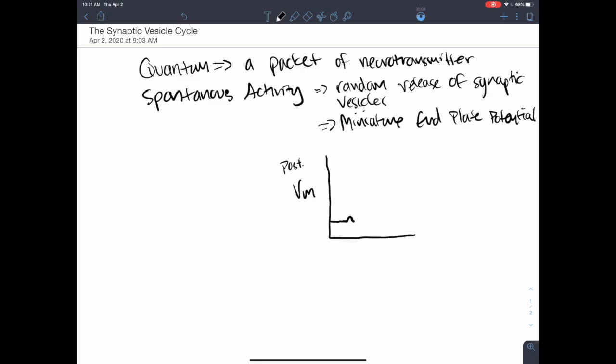I'll see these tiny little bumps. Maybe there's two vesicles, so the bump's a little bigger. But it demonstrated to early scientists that there were distinct units relating to the release of quantum packets of neurotransmitter.